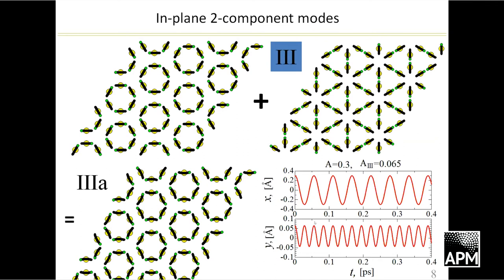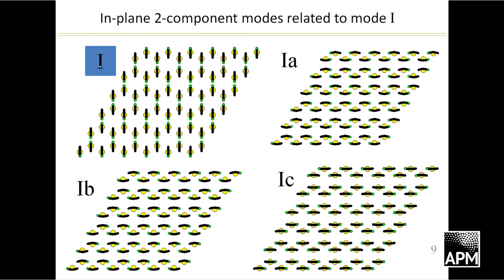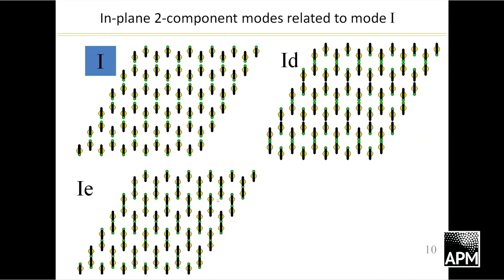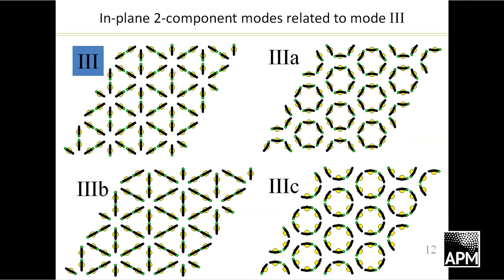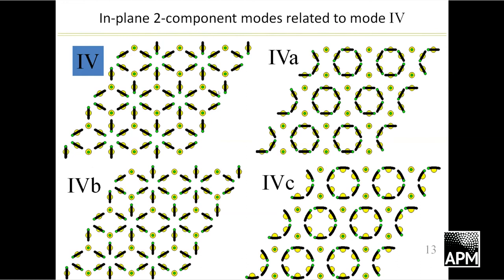Using this approach, we were able to create 12 two-dimensional modes in total, based on four root one-dimensional modes. For example, based on mode number one — where atomic lines slide along each other — we created modes 1A, 1B, 1C, 1D, and 1F: five new modes. Using mode two as a root gave mode 2A with a sophisticated pattern. Mode three as root yielded three more modes: 3A, 3B, and 3C. Similarly for mode four. In total, 12 two-dimensional modes were obtained from four root one-dimensional modes.